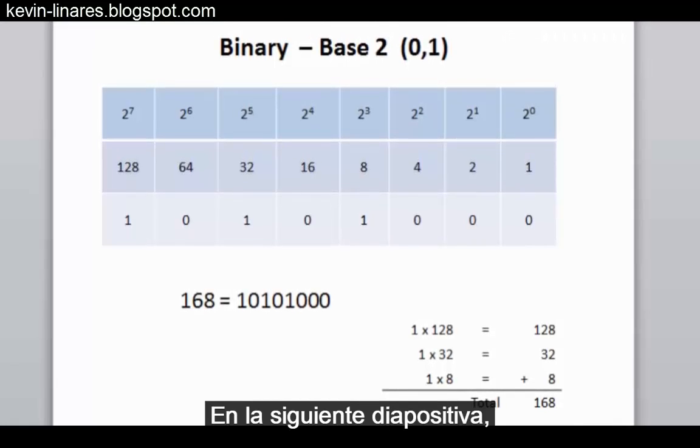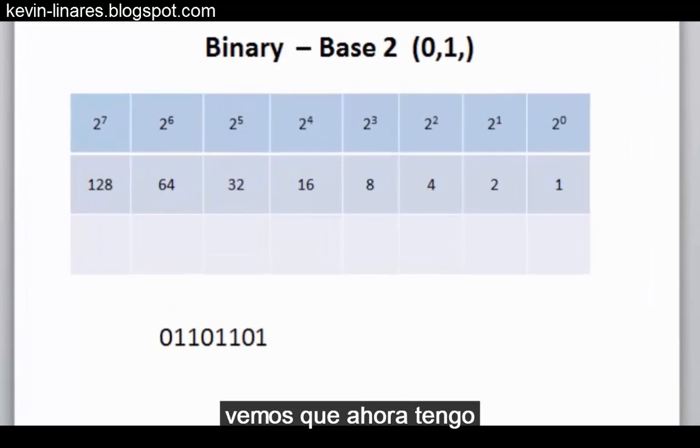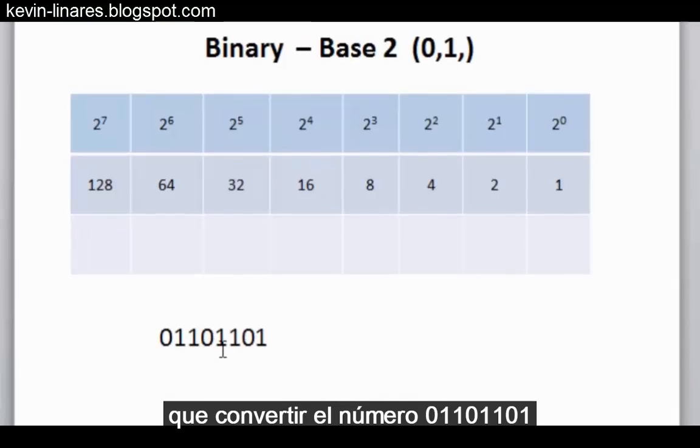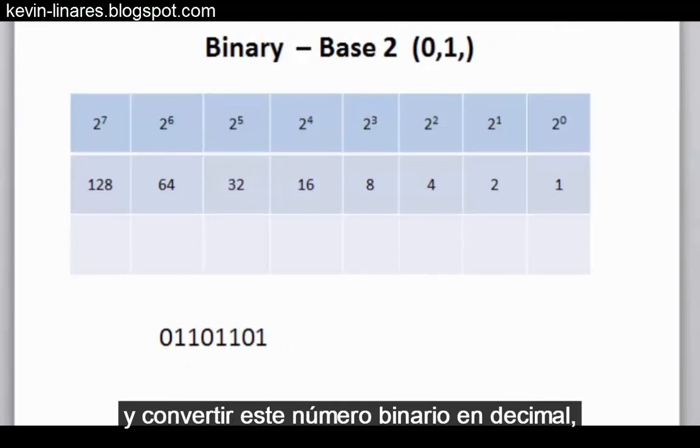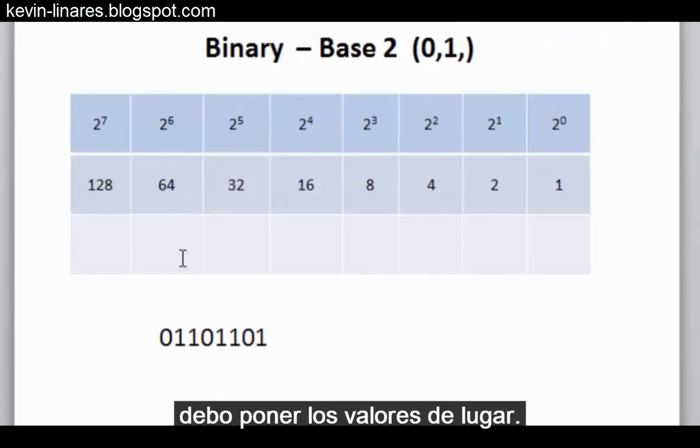If we go to the next slide, you can see now that I'm charged with converting the number 01101101 to decimal. If I want to go the opposite way and convert this binary number to decimal, all I need to do is plug it into the place values.